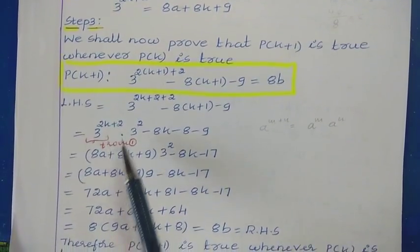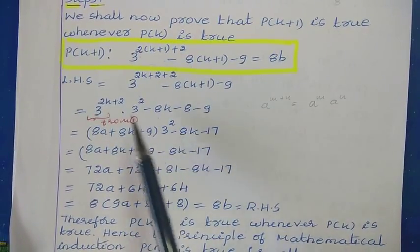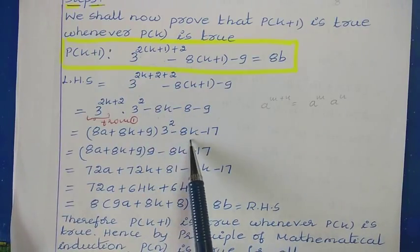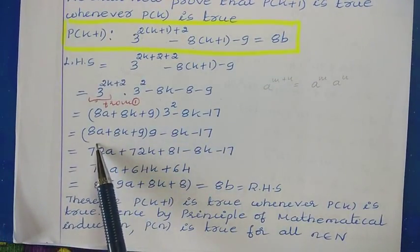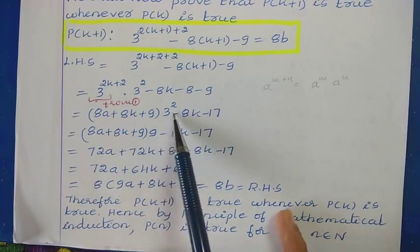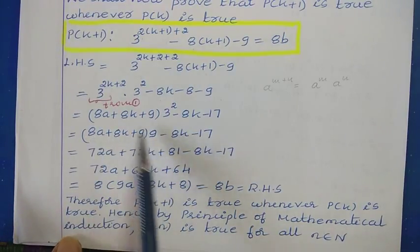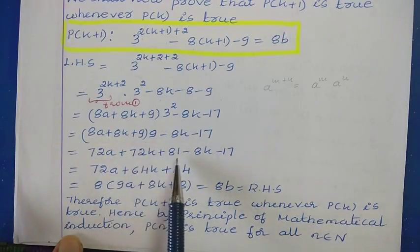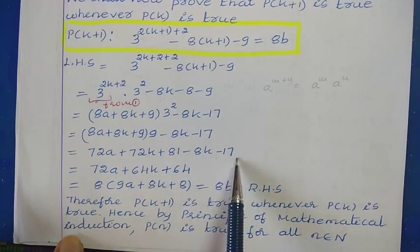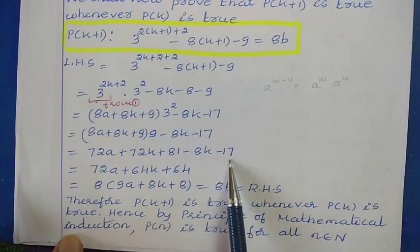Substituting the assumption, we get (8a plus 8k plus 9) into 3 squared, minus 8k minus 8 minus 9, which is minus 17. Expanding: (8a plus 8k plus 9) into 9, minus 8k minus 17. Multiplying through by 9: 72a plus 72k plus 81. Then combining: 72k minus 8k gives 64k, and 81 minus 17 gives 64.